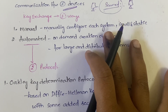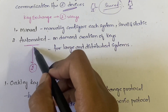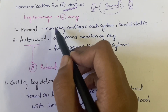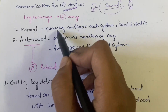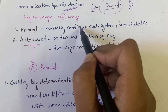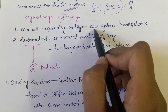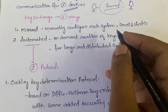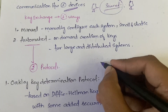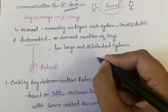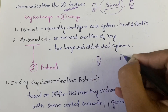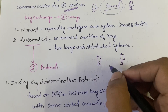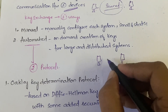Internet key exchange can be done in two ways: first is manual and second is automated. In manual key exchange, the system administrator will manually configure each system with its own keys and with the keys of the other systems involved in the communication. Suppose you have Host A and Host B.